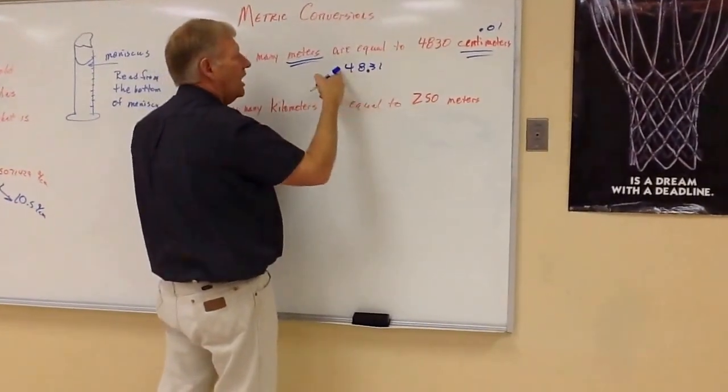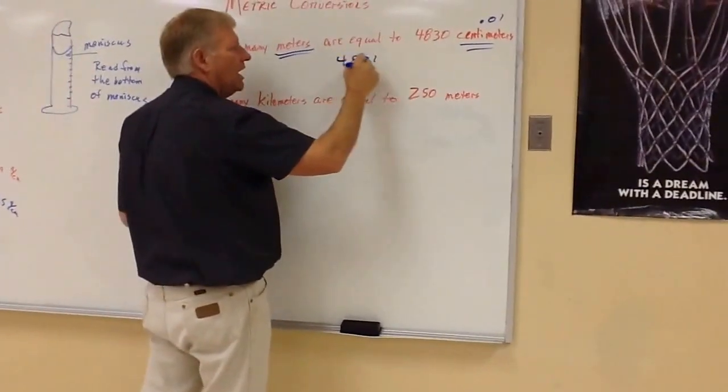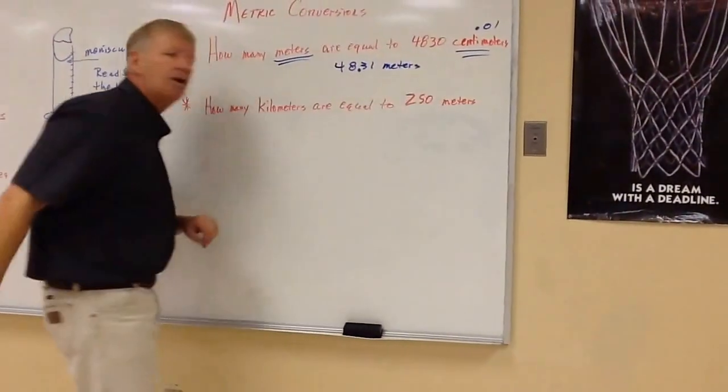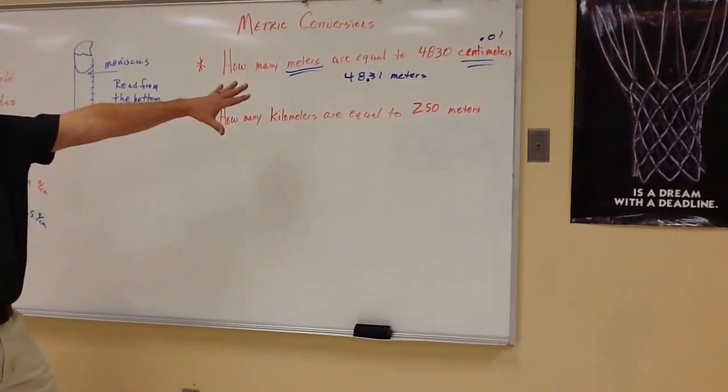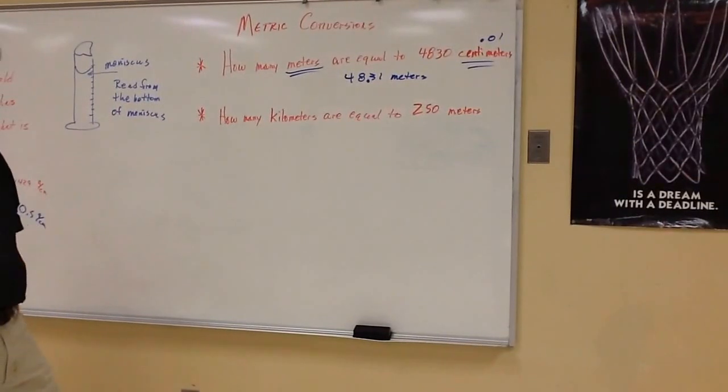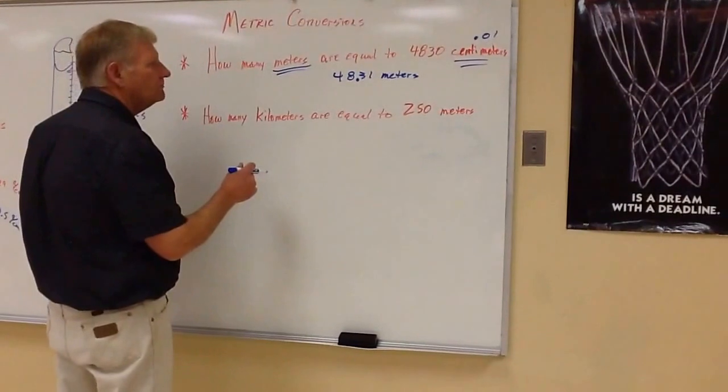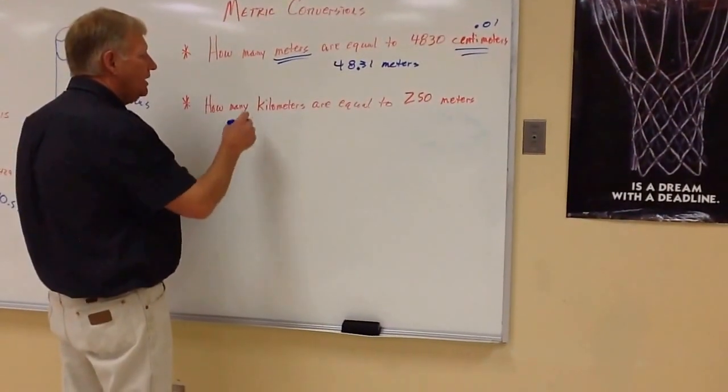So once again, so how many meters are equal to this? So we're going to have 48.31 meters are equal to 4,830 centimeters. So see what the beauty is? It's all just changing the decimal place. So let's do another one. All right? So now, how many kilometers?